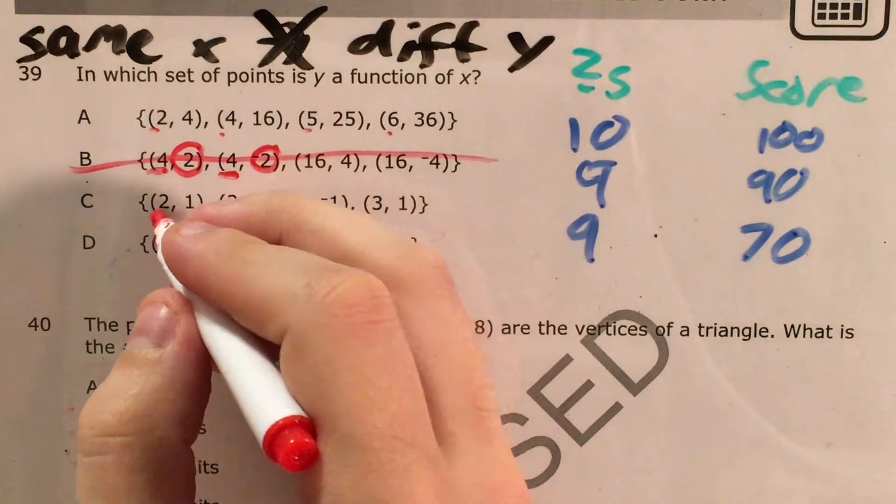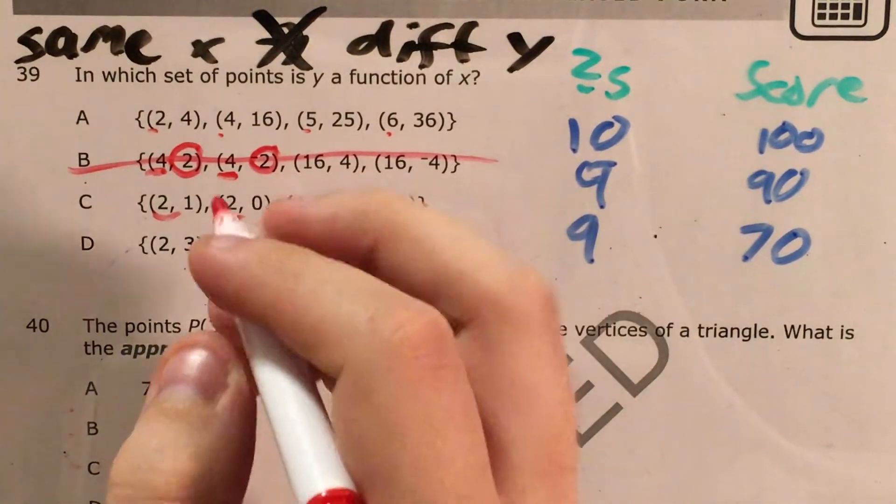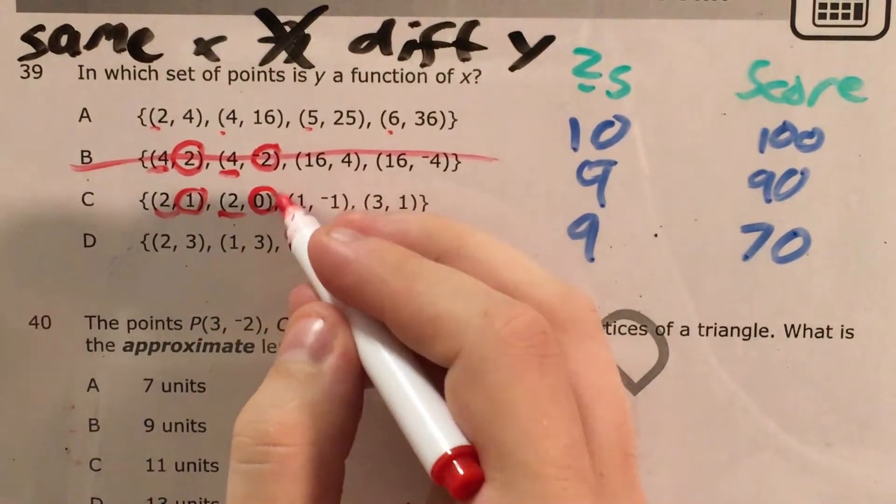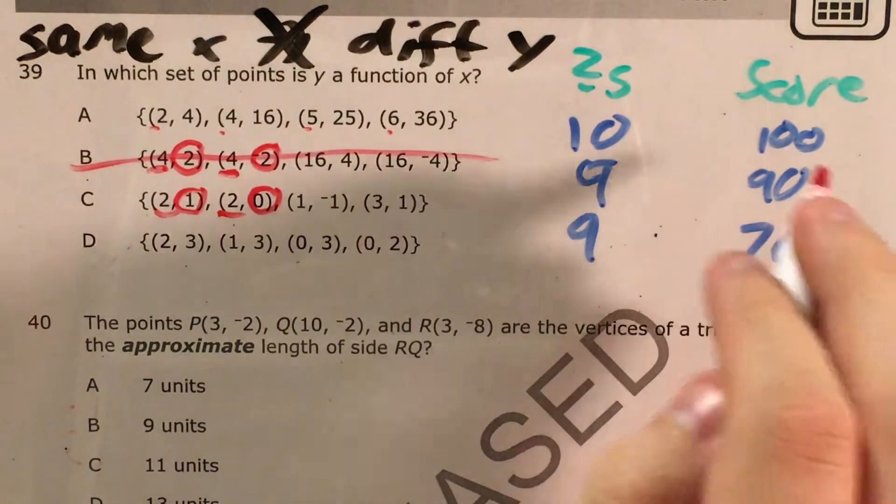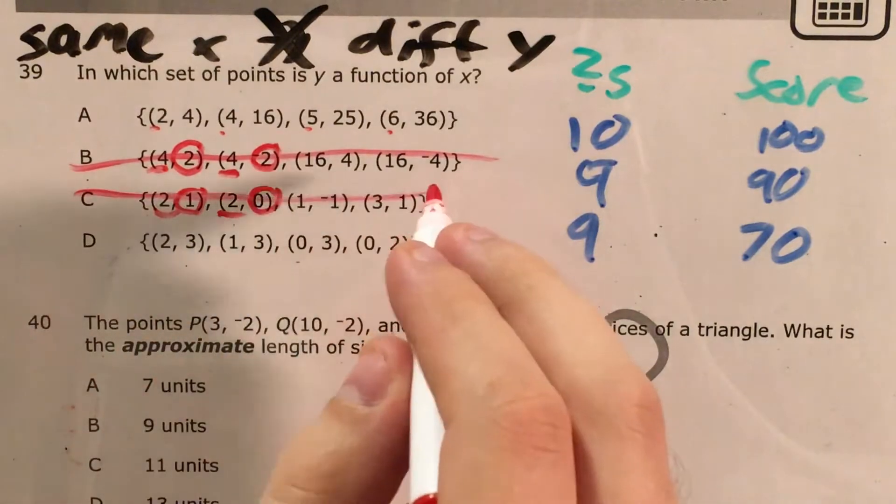For choice C, x of 2, x of 2. In this point it gives us a y of 1. In this point it gives us a y of 0. Same thing. The same number of questions is giving us two different scores. Not a function, not our answer.